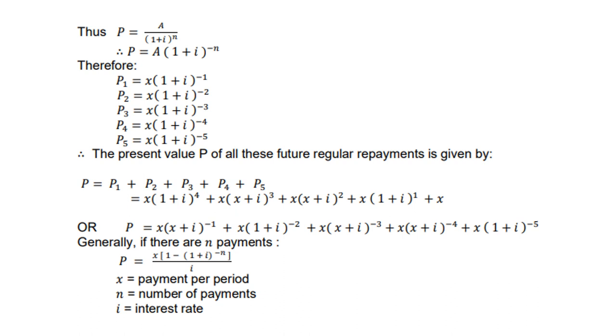So the present value P of all these future regular payments is given by P equals P1 plus P2 up to P5. Or we can write them with P equals x times 1 plus i to the power negative 1, then to the power negative 2, then to the power negative 3, negative 4, and negative 5. So generally, these are the n amount of payments. So the formula for present value will look like this: x times 1 minus 1 plus i to the power negative n over i, where x is payment per period, n is number of payments, and i is the interest.